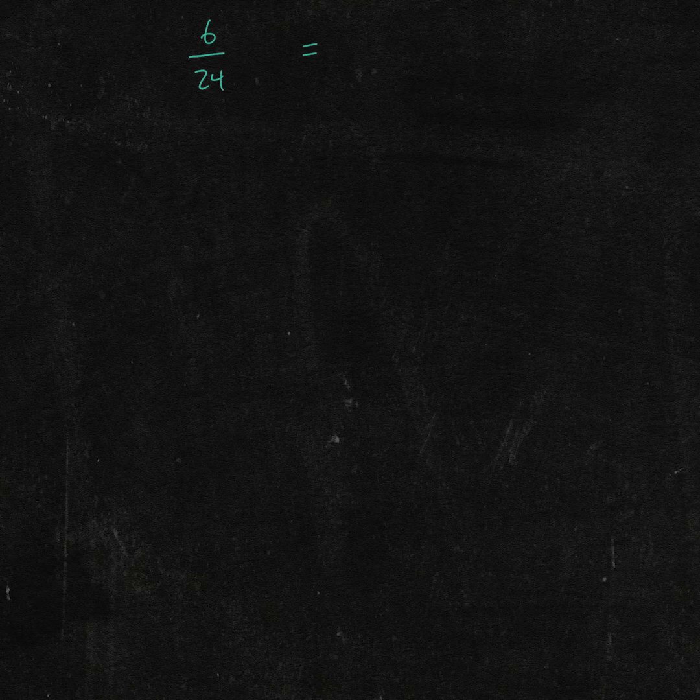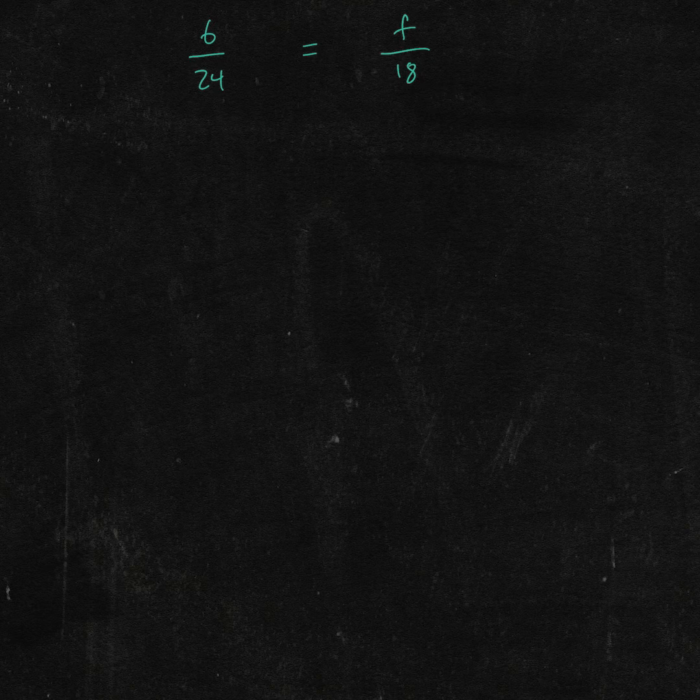If I write this out in fraction notation, so 6 over 24, which should be equal to F—this is what we're going to find out—over 18 eggs. One way to solve for our unknown amount of flour, which is F,